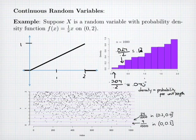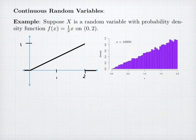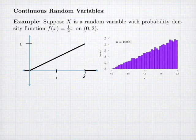Each of the rectangles in this histogram doesn't represent actual probability — it's the probability per unit length. If I do a much bigger simulation, for example with 10,000 data points, I can create a histogram with a lot more bins and narrower interval widths, and it looks very similar to the density function.